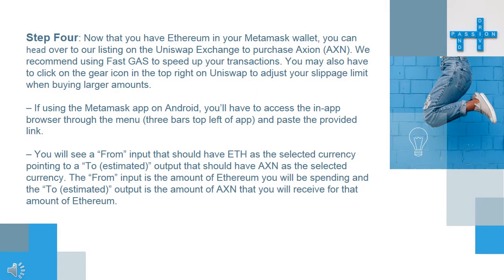Step 4: Now that you have Ethereum in your Metamask wallet, you can head over to our listing on the Uniswap exchange to purchase Axion. We recommend using FastGas to speed up your transactions. You may also have to click on the gear icon in the top right on Uniswap to adjust your slippage limit when buying larger amounts. If using the Metamask app on Android, you'll have to access the in-app browser through the menu — 3 bars top left of app — and paste the provided link.